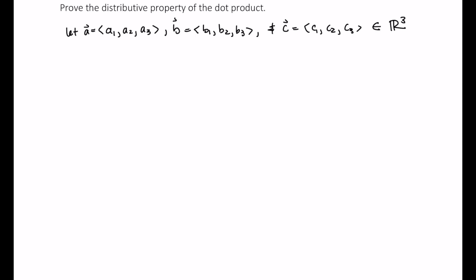The distributive property is as follows. So C dotted with A plus B, well that's C dotted with A plus C dotted with B, and this is what we're going to show is true.